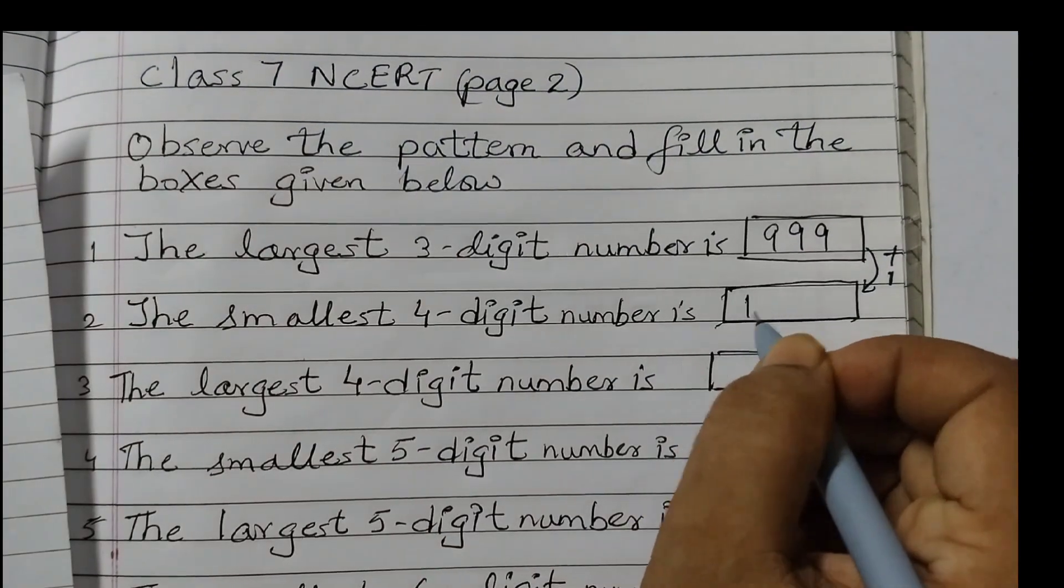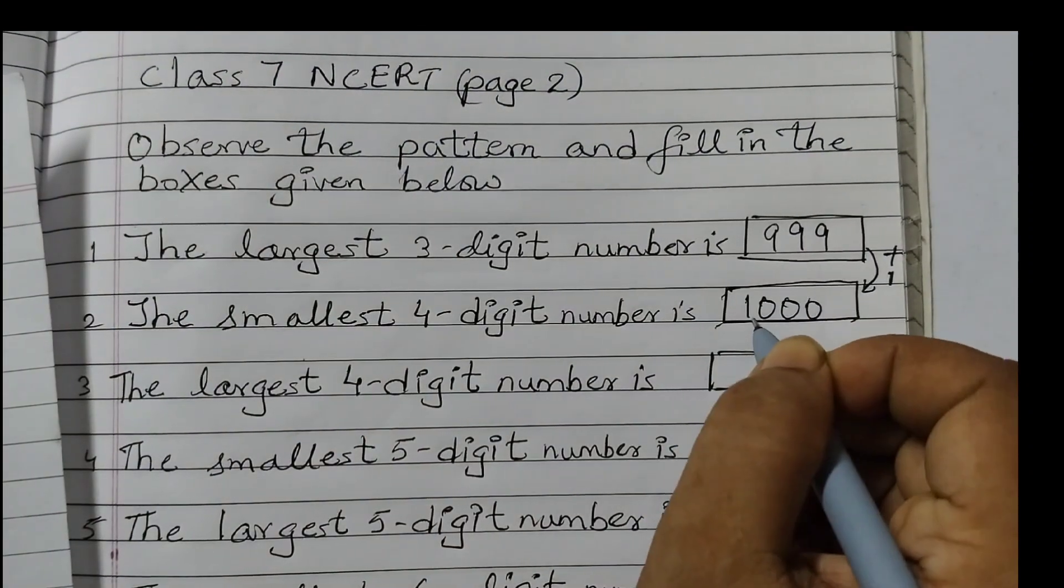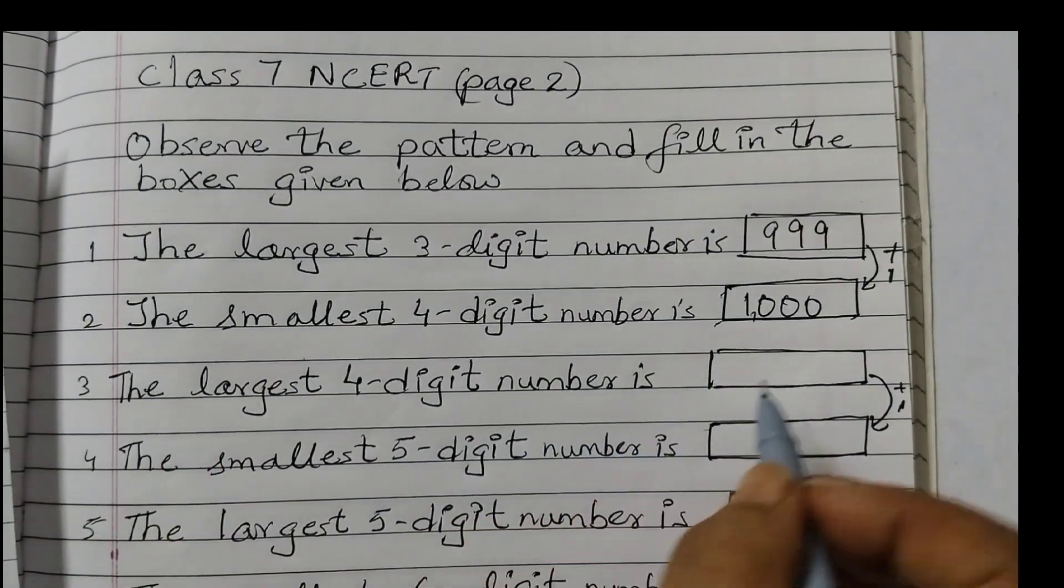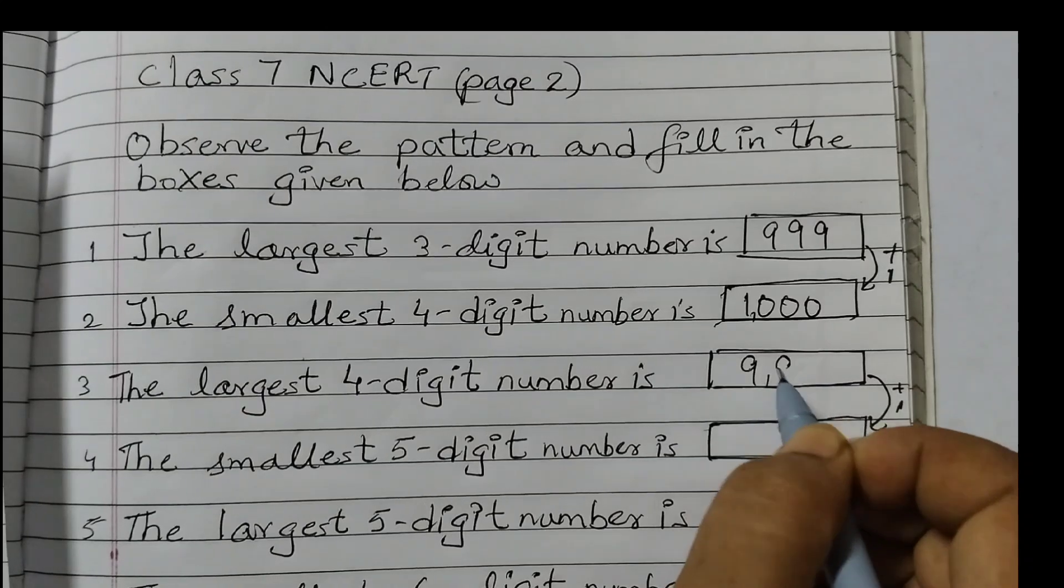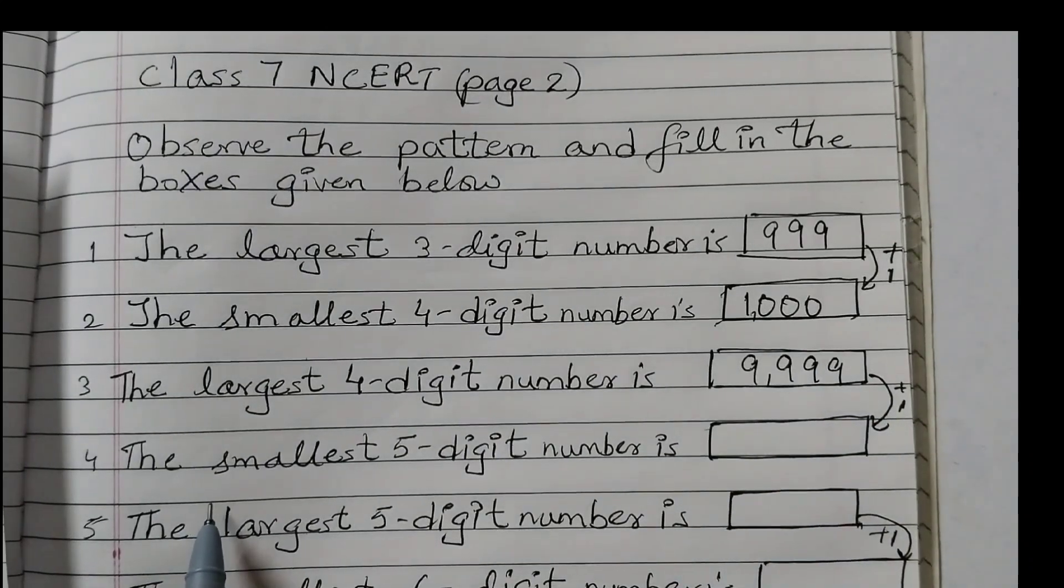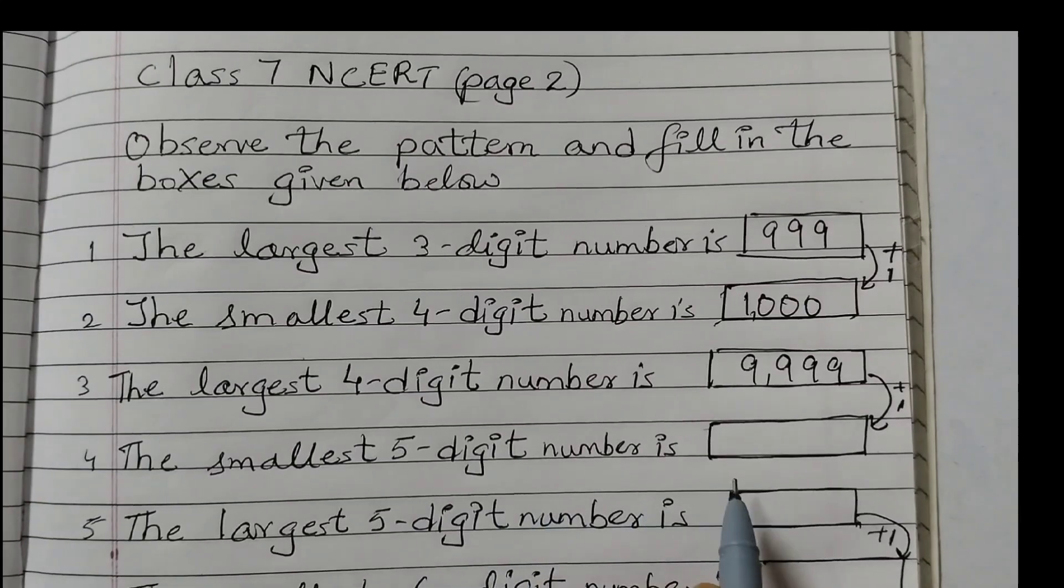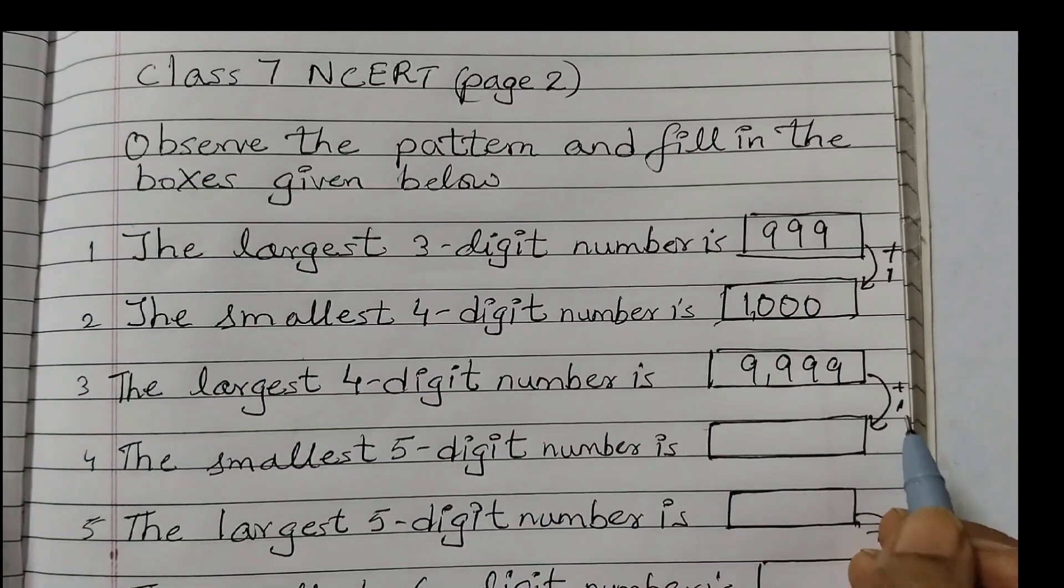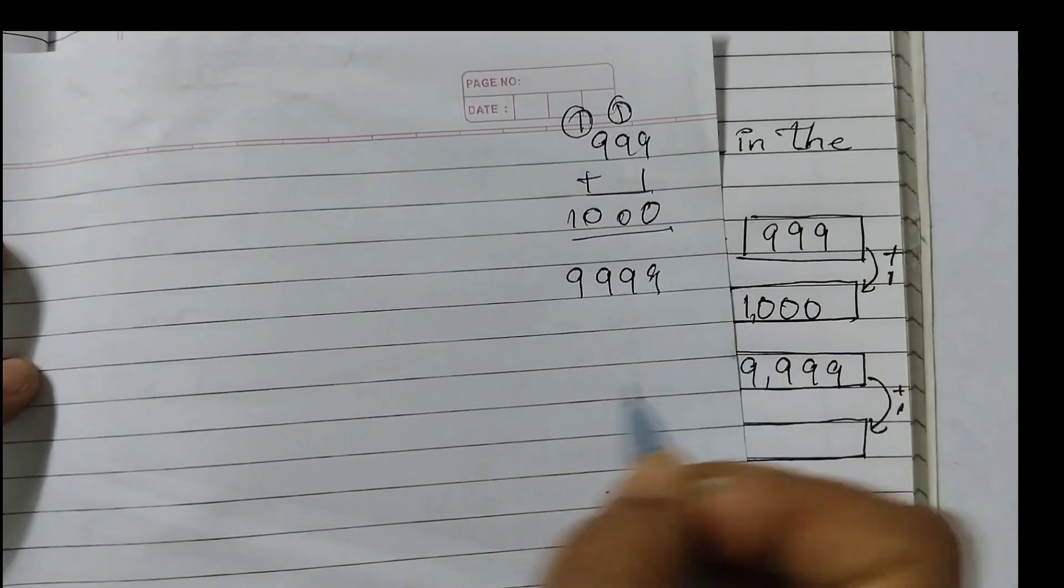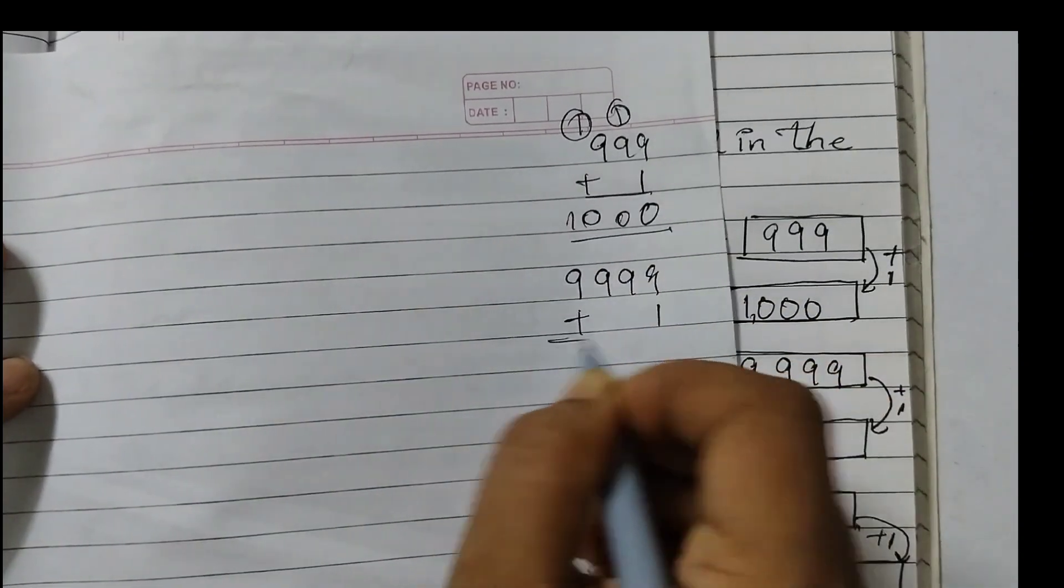So the smallest 4 digit number is 1000. So we can just put a comma here. The largest 4 digit number is 9999. The smallest 5 digit number is, just add 1 to this.